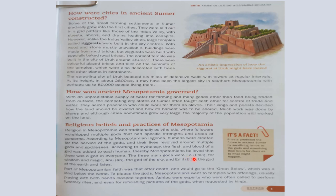The three main gods were Ea (or Enki) for wisdom and magic, Anu (or An) the god of the sky, and Enlil (or Ellil) the god of the earth and fates. Part of Mesopotamian faith was that after death one would go to the Great Below, a land below the world. To please the gods, Mesopotamians went to temples with offerings, usually praying with both hands clasped together. Ashipu were experts often called to perform funerary rites and rituals.